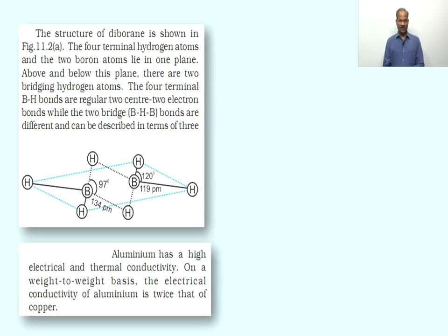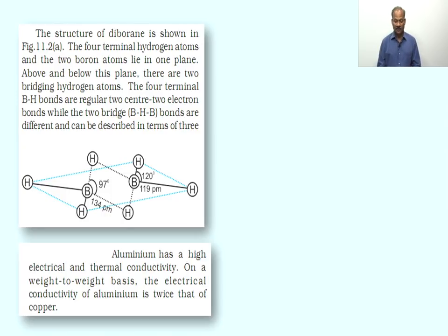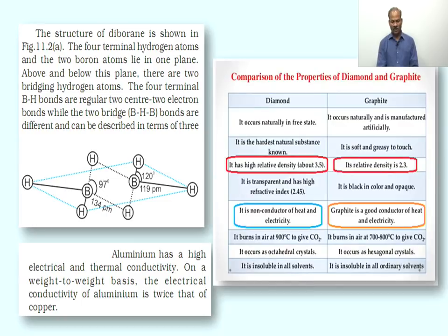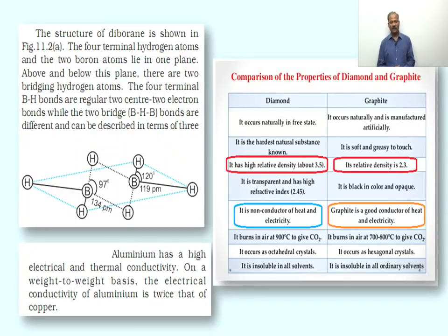Boron and its compounds have important chemistry — revise them carefully. Regarding aluminium, it has high electrical and thermal conductivity. On a weight-to-weight basis, the electrical conductivity of aluminium is twice that of copper. Now let us discuss Group 14.